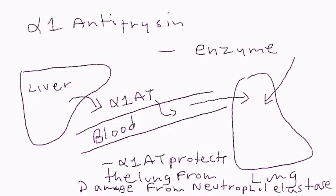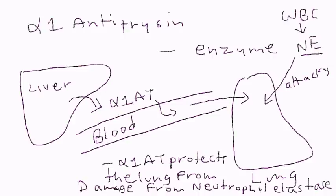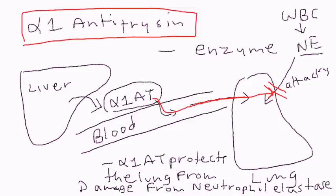Neutrophil elastase — abbreviated NE — is a protease that white blood cells produce. A protease by definition breaks down protein. Neutrophil elastase attacks the lung, and what alpha-1 antitrypsin does is stop that from happening. So alpha-1 antitrypsin is an enzyme that protects the lung from damage from neutrophil elastase.